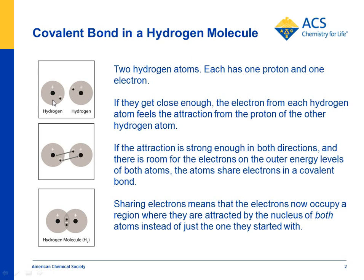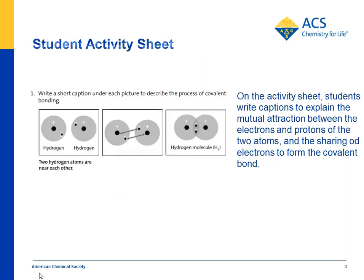You can see that the two hydrogen atoms are near each other, and that their mutual attraction — the proton from one and the electron from the other — bring them together. And then when they bond, they're more stable now that they're bonded than when they were separated.